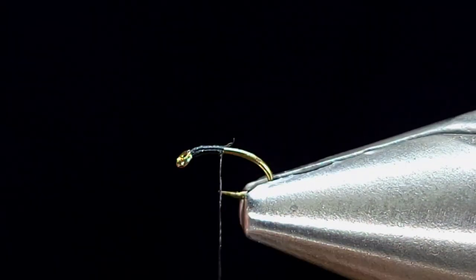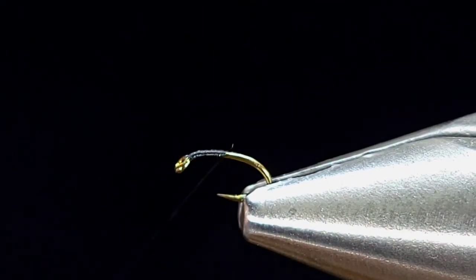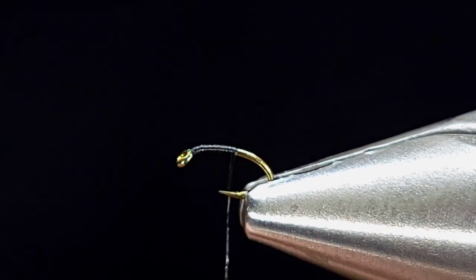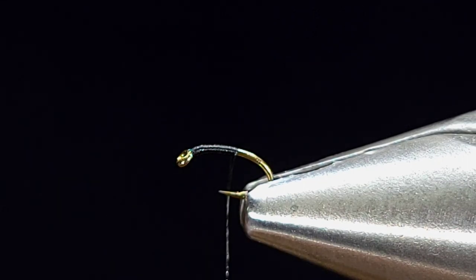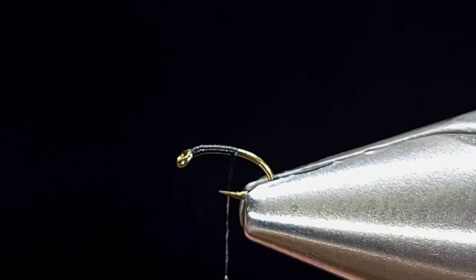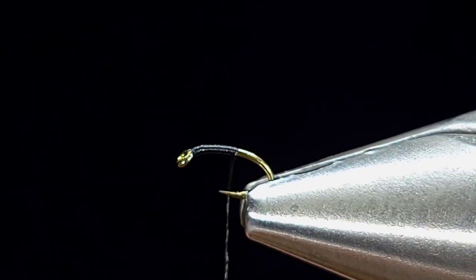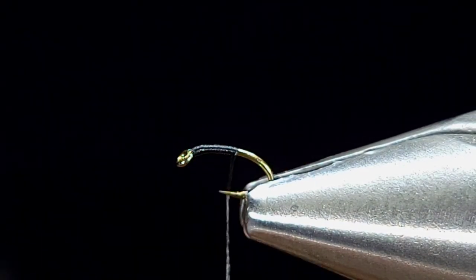And as always, I'm using my Renomed scissors today. I've tied about a thousand flies on this pair of scissors already, and they still cut NanoSilk like butter. Super sharp, handmade. Go check them out. The link's in my link tree if you haven't already.